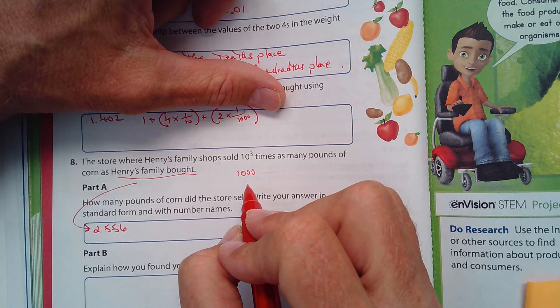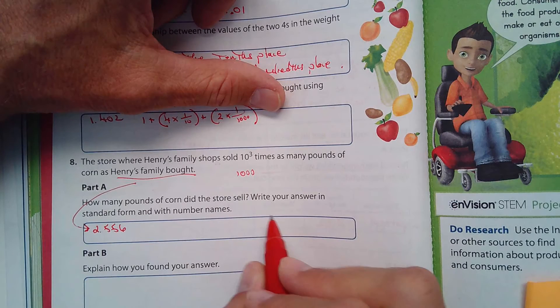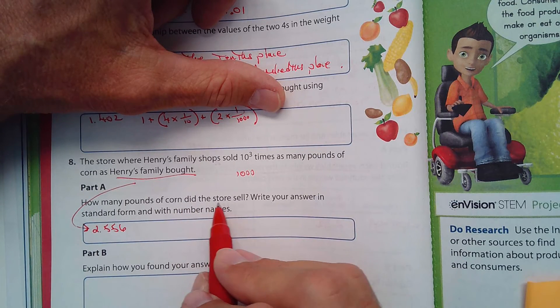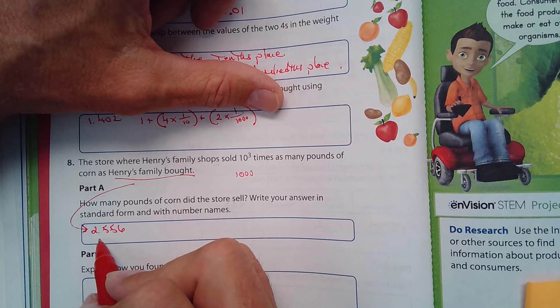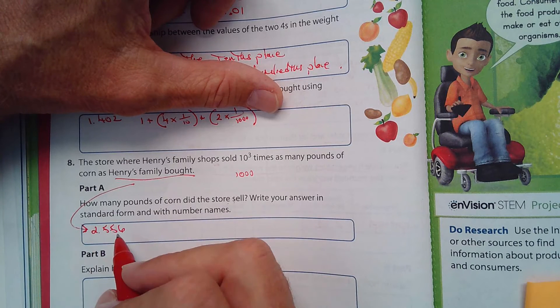So, where do we move the decimal? Because it says, how many pounds of corn did the store sell? Well, move the decimal three places. This number needs to get larger.